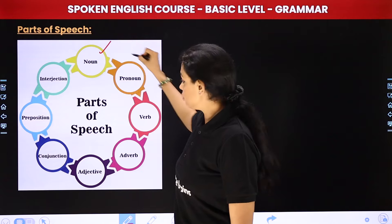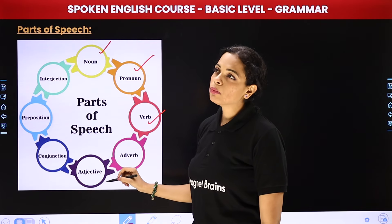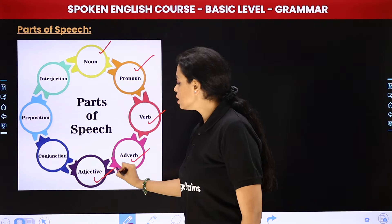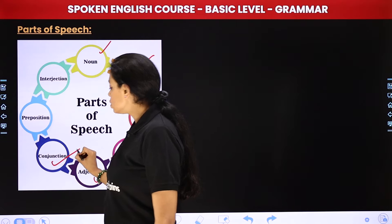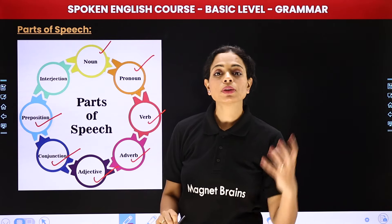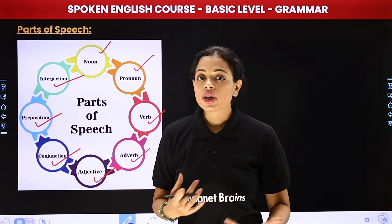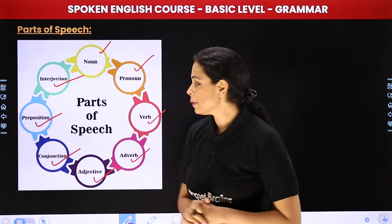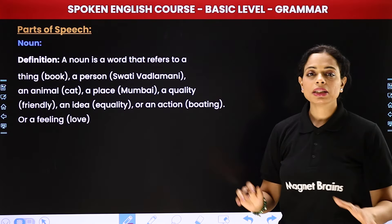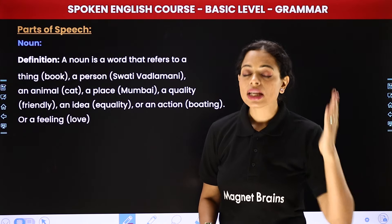Parts of speech mein: noun hai, pronoun — jo ki hota hai verb, us ke baad adverb. Adverb ko kya bulte hain? Ek toh vishishan hota hai — adjective ko kya bulte hain, aap mujhe batana. Adverb hota hai. Adjective is your vishishan. Us ke baad hai conjunction — matlab joining words. Then you have preposition — matlab jo words position batate hain. Interjection — matlab jo words aapko batate hain ki koi shock hai ya surprise hai us sentence mein. Ye saari cheezein batate hain — so yeh hoti hain parts of speech.